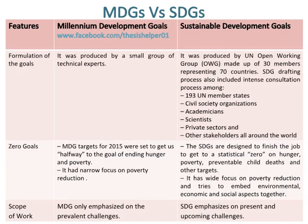Formulation of the Goals in MDGs was produced by a small group of technical experts. Whereas, formulation of the Goals in SDGs was produced by the UN Open Working Group (OWG), made up of 30 members representing 70 countries. The SDGs drafting process also included an intense consultation process among 193 UN member states, civil society organizations, academicians, scientists, private sectors and other stakeholders all around the world.